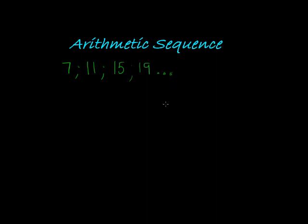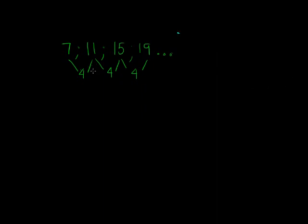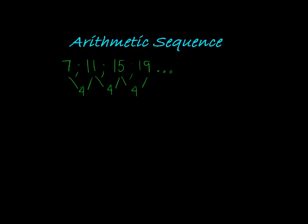So this is an arithmetic sequence, and we see each time when I subtract consecutive terms, so 11 minus 7 gives me 4, 15 minus 11 gives me 4, 19 minus 15 gives me 4, and now I see I've got a constant difference.